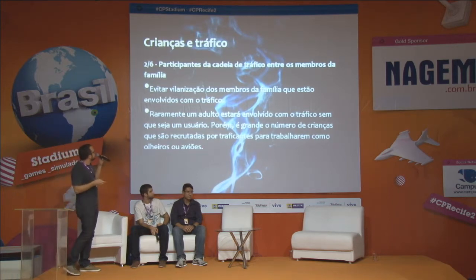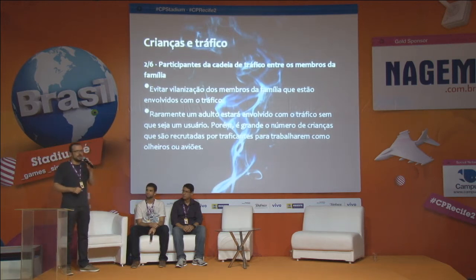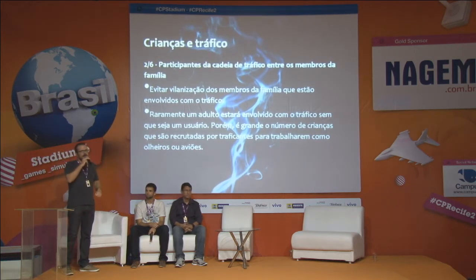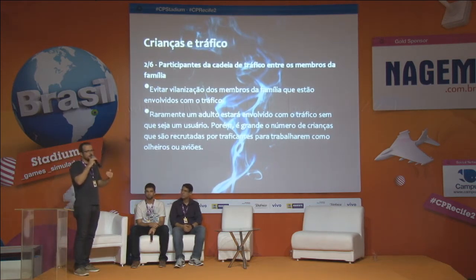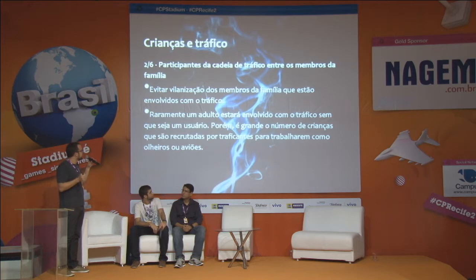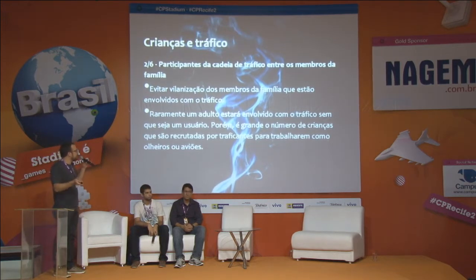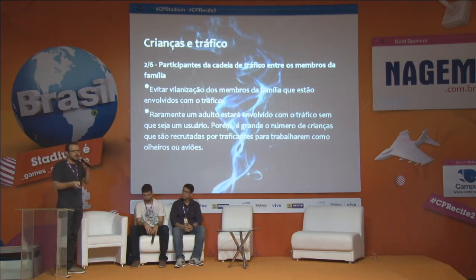O segundo caso são crianças que conhecem participantes do tráfico dentro da comunidade — às vezes um tio ou um amigo é olheiro ou aviãozinho, e essas crianças estão muito próximas das transações envolvendo droga. A gente tem que tomar cuidado para evitar vilanizar, evitar transformar em vilões as pessoas que são cooptadas pelo tráfico, porque muitas vezes essas pessoas não têm escolha. É grande o número de crianças recrutadas por traficantes para trabalharem como olheiros ou aviões, e essas crianças muitas vezes conhecem outras crianças que estão trabalhando no tráfico.